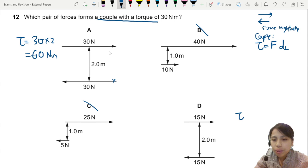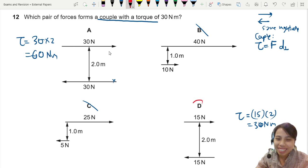D, the torque, would be 15 times 2. That will give us 30 Nm. Ah, yes. This is correct. So we'll choose D as our answer.